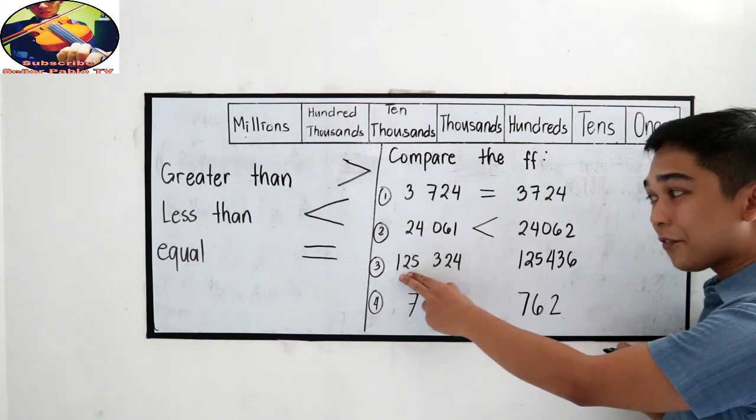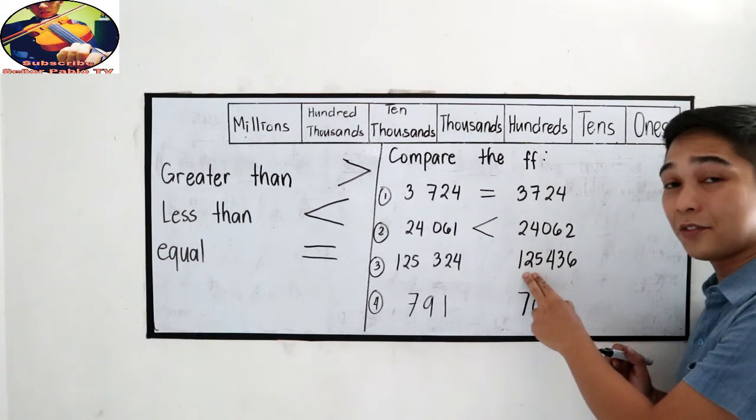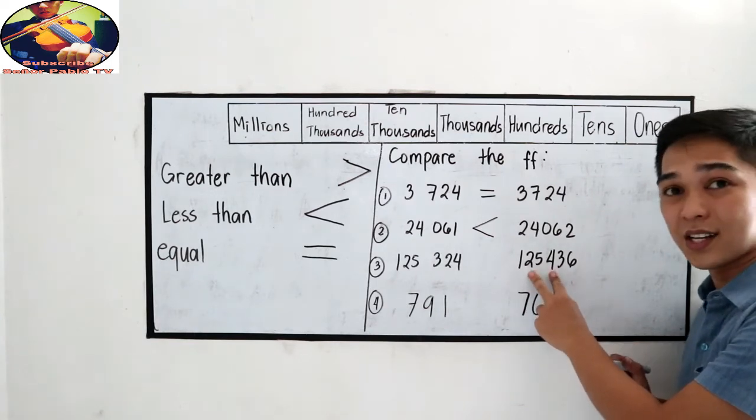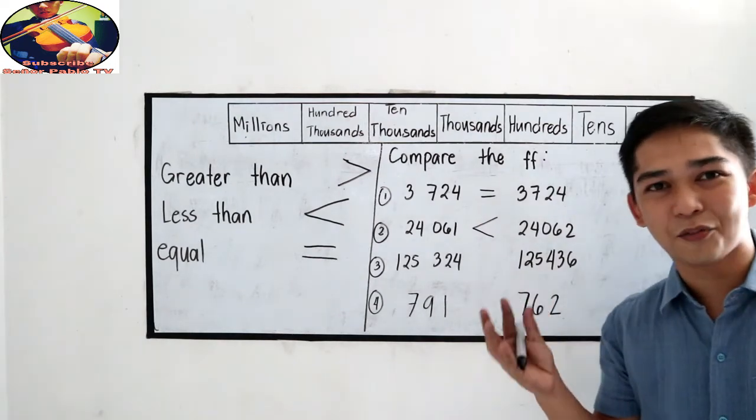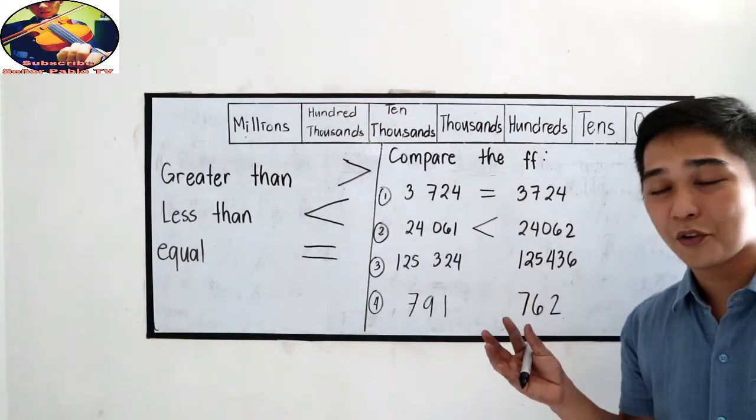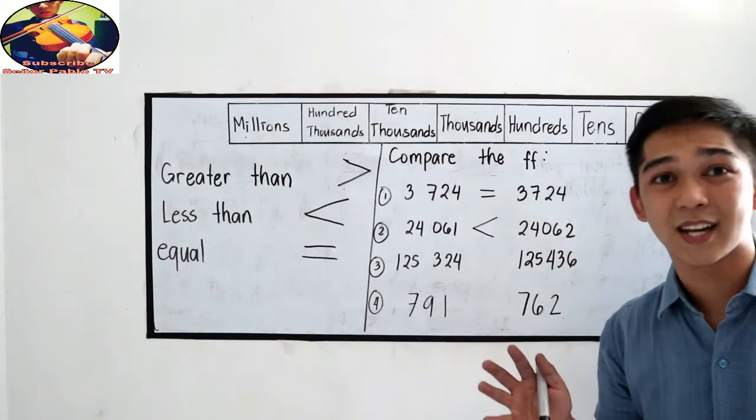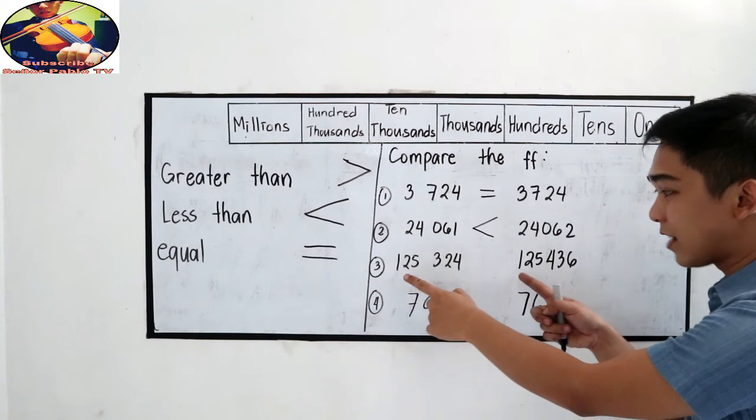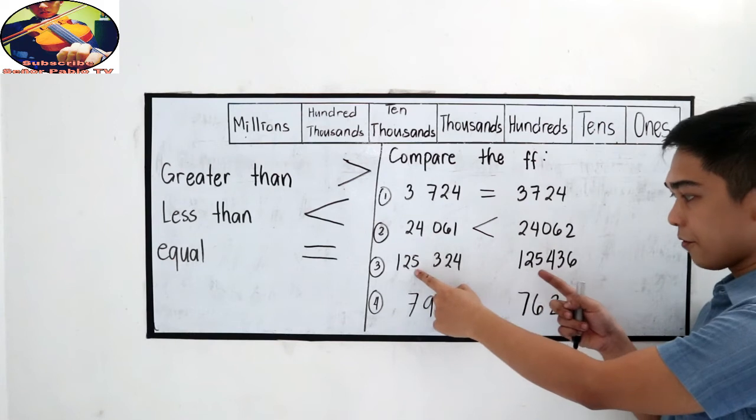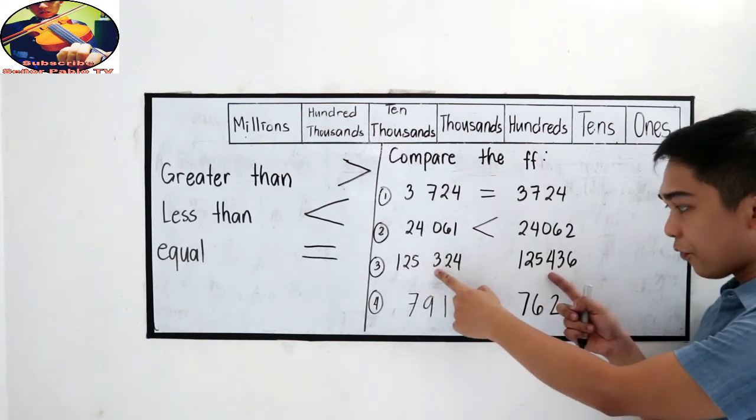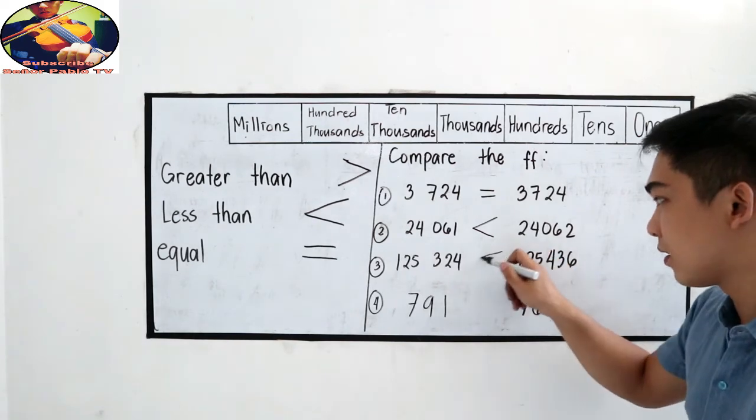125,324 and 125,436. They are very different if you are going to read. Let us use our place value to determine which is greater or less than. The highest place value, they are the same. That's 2, then 5. Then 3 or 4, which is greater? 4 is greater. So we will use the less than symbol.